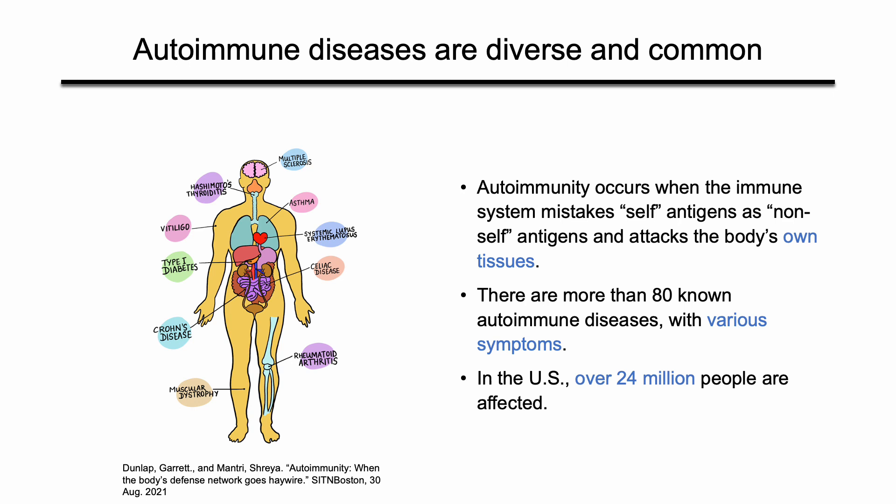Moreover, according to the NIH report in 2005, in the United States there are over 24 million people that are affected by autoimmune diseases. Although the mechanism behind autoimmunity remains unclear, studies have shown that there is a cell type that plays a very important role in many of the autoimmune diseases: the Th17 cells.